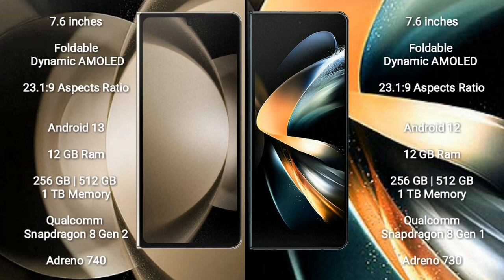Samsung Galaxy Z Fold 5 comes with 12GB RAM and 256GB or 512GB or 1TB internal storage, Qualcomm Snapdragon 8 Gen 2 processor, and GPU Adreno 740. Samsung Galaxy Z Fold 4 comes with 12GB RAM and 256GB or 512GB or 1TB internal storage, Qualcomm Snapdragon 8 Gen 1 processor, and GPU Adreno 730.